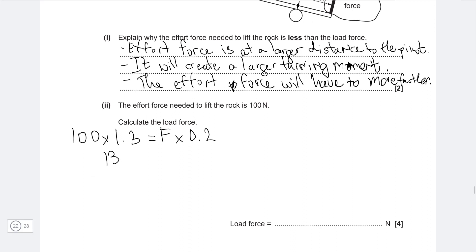Now let's just rearrange for F. So this here on the left hand side will be 130, will be F times 0.2, meaning that F will be 130 over 0.2. And if we were to calculate this, we're going to get 650 newtons for the load force.